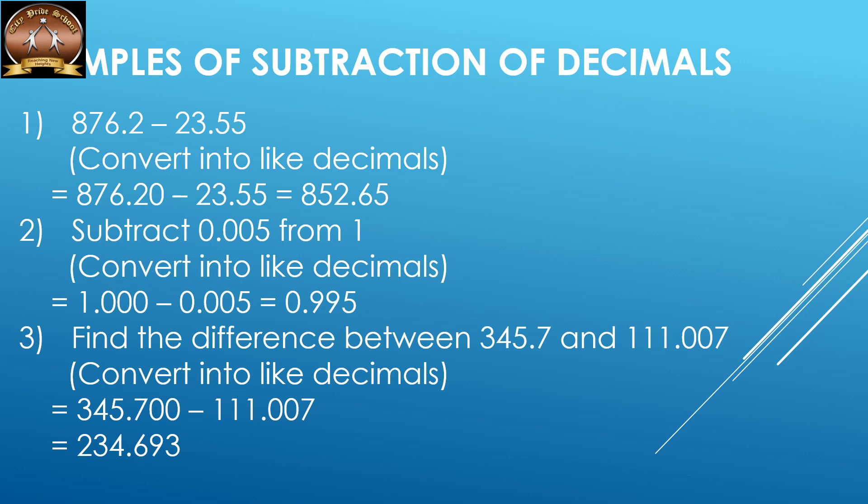The third one: find the difference between 345.7 and 111.007. When the question says 'find the difference,' write the numbers in the sequence as they appear. So it is 345.700 — because the second decimal has three decimal places — minus 111.007, and the subtraction gives 234.693. For the exercises in the textbook, the solutions are in the PDF shared. Thank you very much.